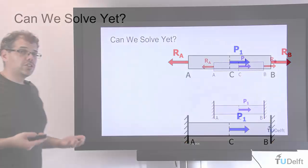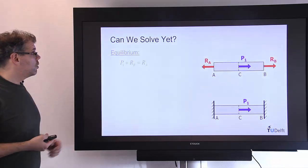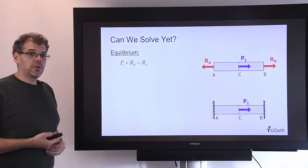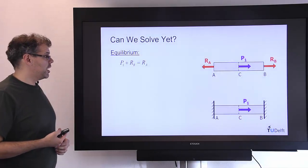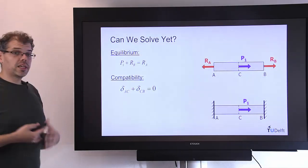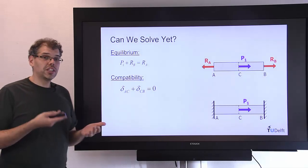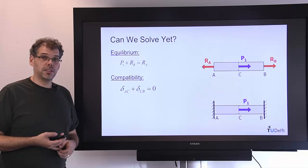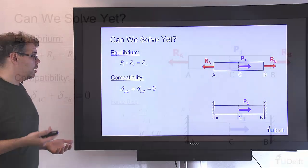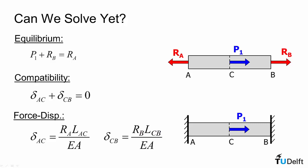With these additional equations can we actually solve? Well we started off with our equilibrium equation which was one equation with the two unknowns RB and RA. We came up with a compatibility equation that actually introduced two additional unknowns delta AC and delta CB. So now we have four unknowns and two equations but then we also have two additional force displacement relationships and they don't introduce any new unknowns.